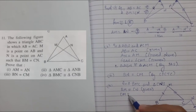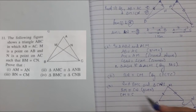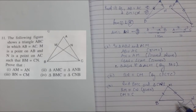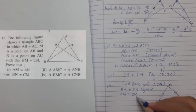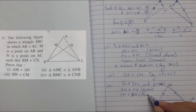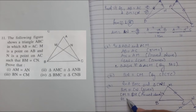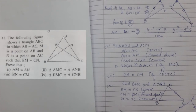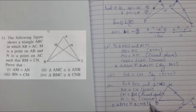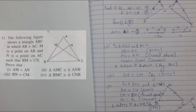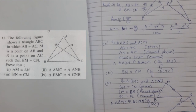Summarizing: BM equals CN (given), CM equals BN (proved above), and BC equals BC (common). Therefore triangle BMC is congruent to triangle CNB by the SSS congruency criteria. That's it for today — see you in the next video.